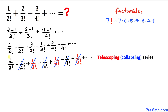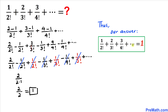Therefore we are left with just one fraction: 2 divided by 2 factorial, which equals 2 divided by 2, which equals 1. So the sum of this infinite series turns out to be equal to 1. Thanks for watching — please don't forget to subscribe to my channel for more exciting videos. Bye!